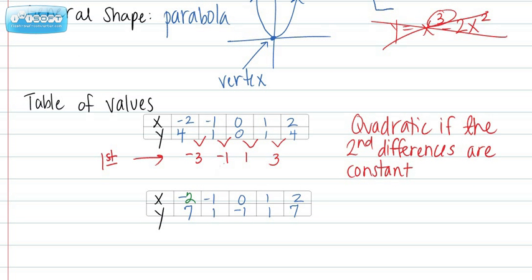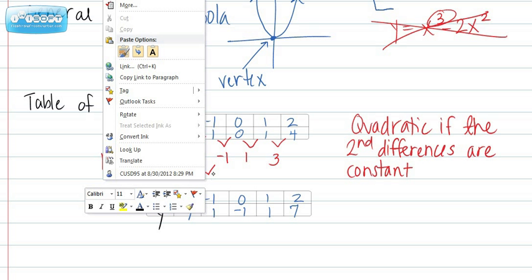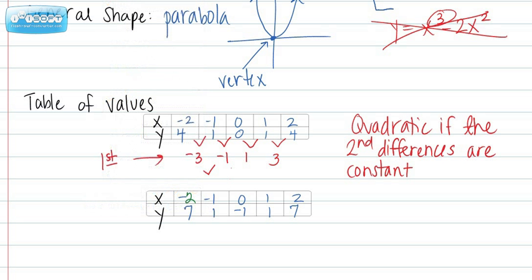So, I'm going to try one more time. Negative 1 minus negative 3 becomes a positive 2. 1 minus negative 1, positive 2, 3 minus 1, positive 2. Now, notice my second difference, all these numbers are constants, so that's how I know that I have a quadratic function.